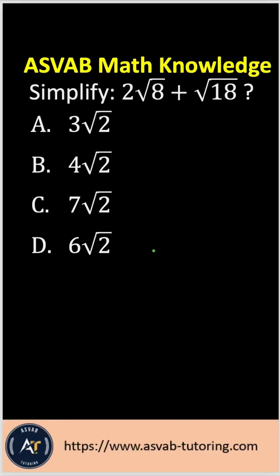Let's practice another very important ASVAB math knowledge question. It says simplify 2√8 + √18. If you want to combine the square roots, make sure that inside of the square roots are the same.